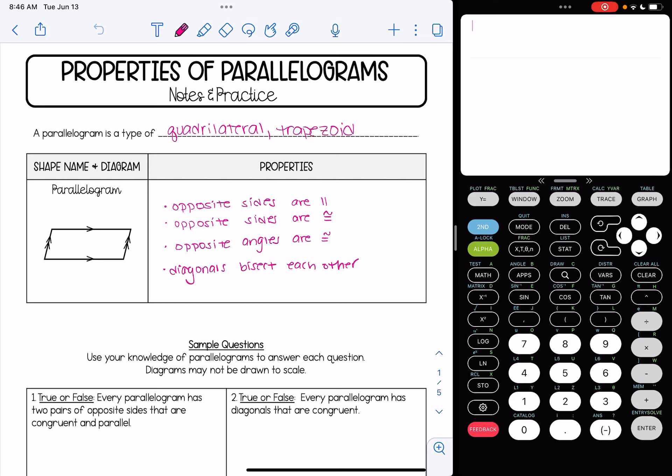In this video, we're going to be discussing the properties of parallelograms. So a parallelogram is a type of quadrilateral, and depending what state you live in and what curriculum your state follows, some states also consider a parallelogram to be a type of trapezoid.